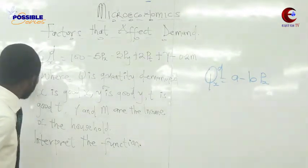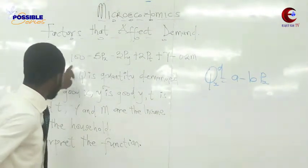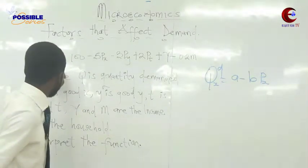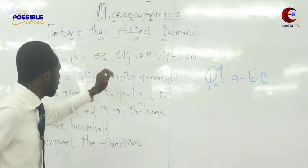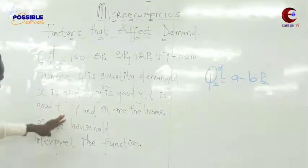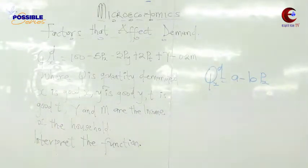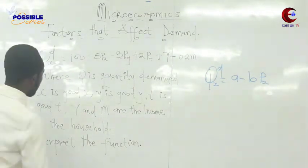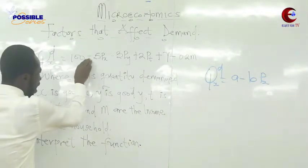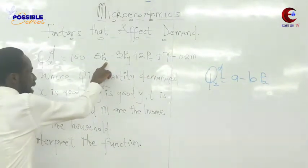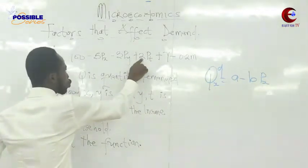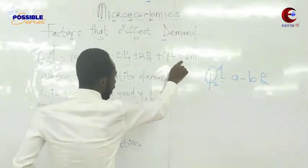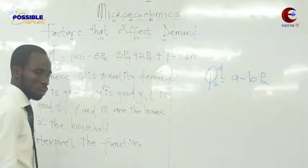Looking at it, we have: QD is equal to 100 minus 5P subscript X, minus 3P subscript Y, plus 2P subscript T, plus Y, minus 0.2N. I am giving you 10 seconds to read the question carefully. Now let us read it together.